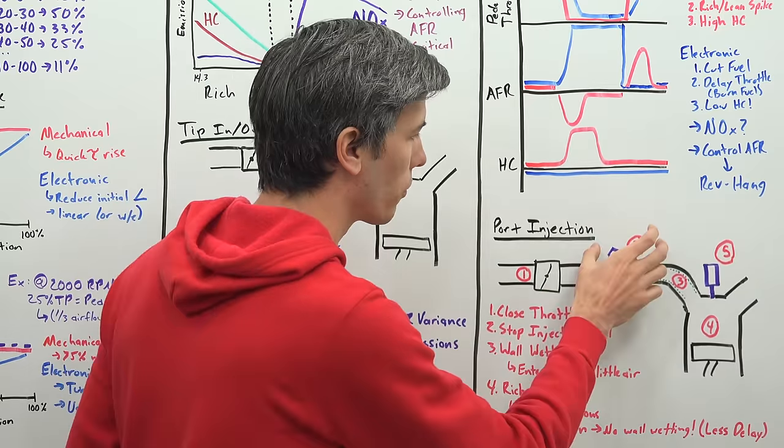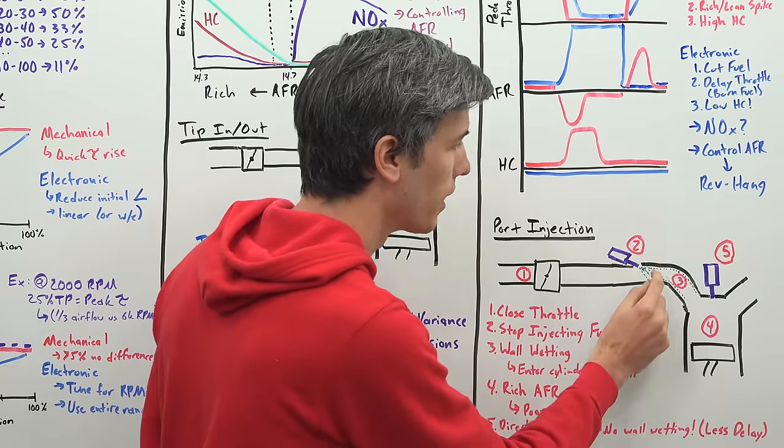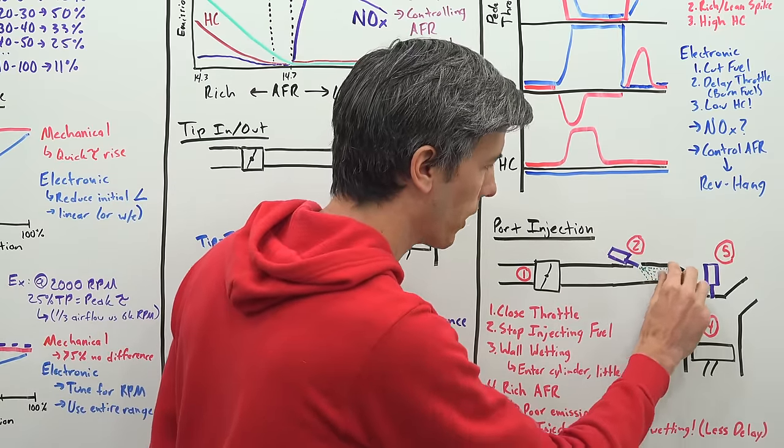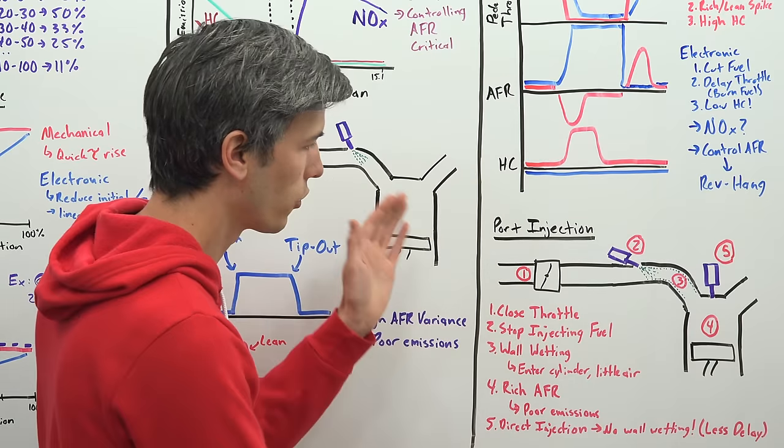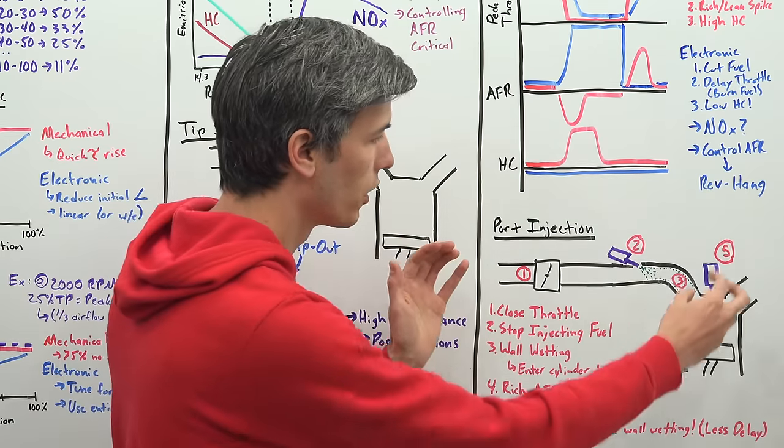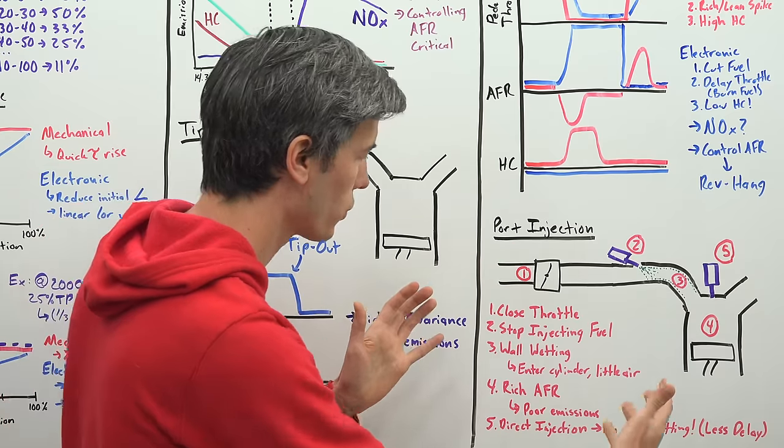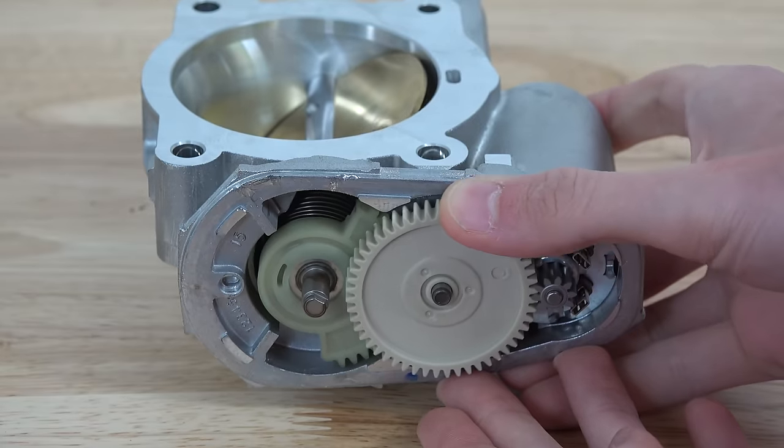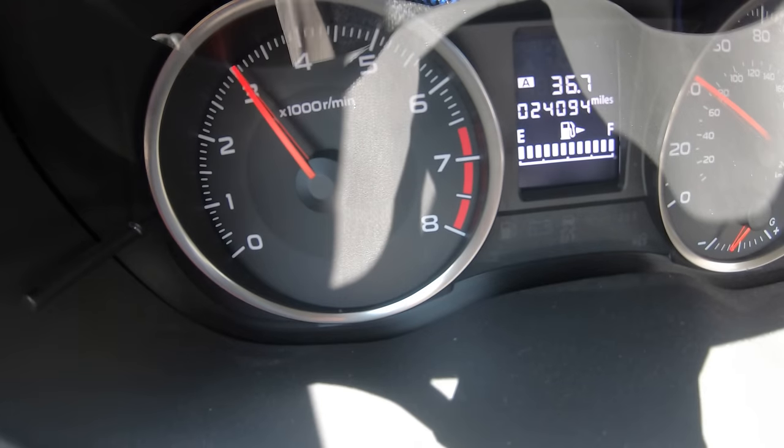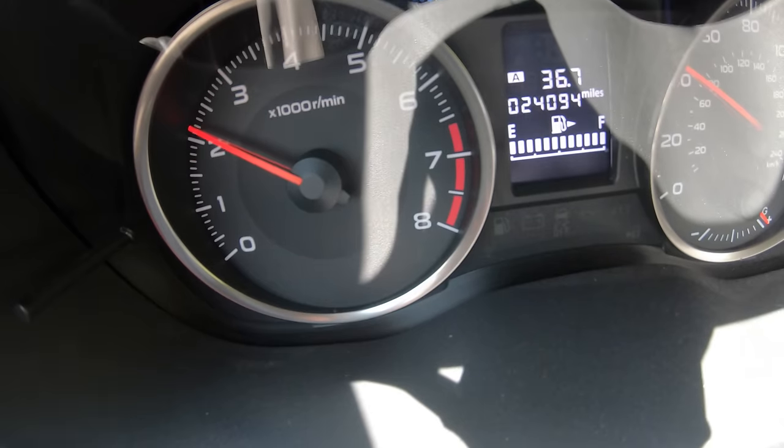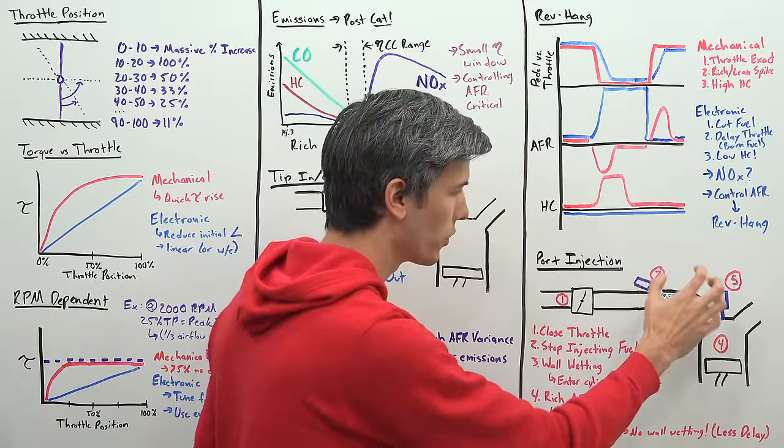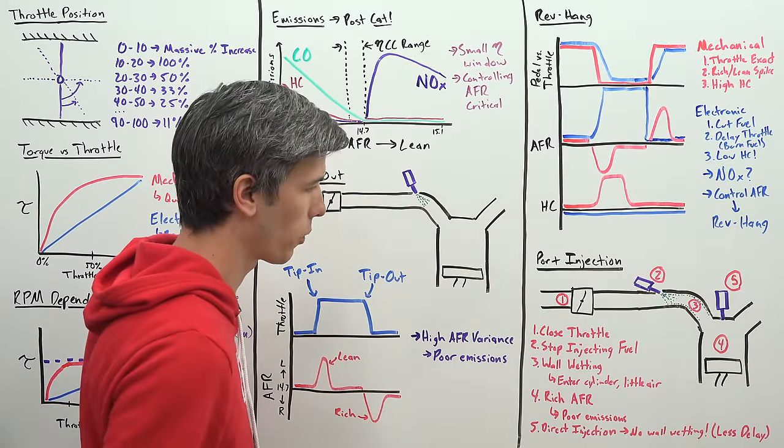And so even though your fuel has been shut off immediately, that fuel on the intake port there is still going to work its way into the engine. And so because you don't have any air going in, you're going to have a rich air fuel mixture and you're still going to have those hydrocarbon emissions. So if you delay that throttle closure, which of course causes rev hang, you can burn off that remaining fuel that's stuck on those intake port walls as it works its way into the engine.